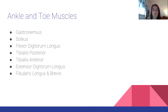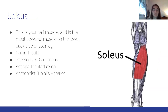Moving to ankle and toe muscles: the soleus is the most powerful muscle on the lower posterior leg and a calf muscle. Origin: fibula. Insertion: calcaneus. Action: plantar flexion. Antagonist: tibialis anterior.